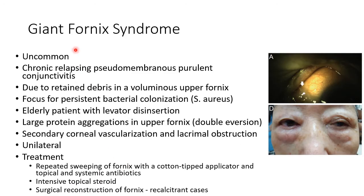Now let us discuss about giant fornix syndrome. It is an uncommon condition leading to chronic relapsing pseudomembranous follicular conjunctivitis. It is due to retained debris in a voluminous upper fornix. This retained debris acts as a focus for persistent bacterial colonization, especially by Staphylococcus aureus. It is usually seen in elderly patients with levator disinsertion. There will be large protein aggregations in the upper fornix, evident on double eversion. There can be secondary corneal vascularization and lacrimal obstruction. It is usually unilateral.